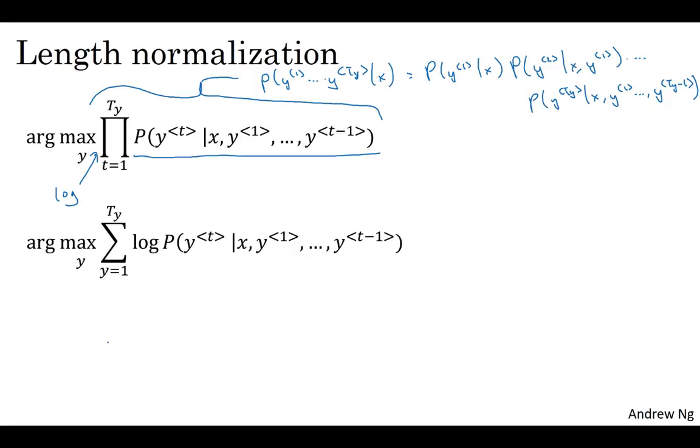By taking logs, you end up with a more numerically stable algorithm that is less prone to rounding errors or numerical underflow. Because the logarithmic function is strictly monotonically increasing, maximizing log p of y given x should give you the same result as maximizing p of y given x—the same value of y that maximizes this should also maximize that.